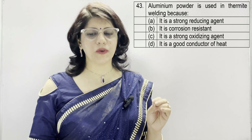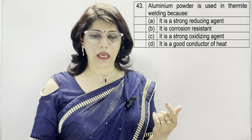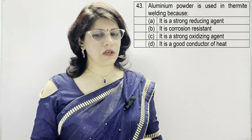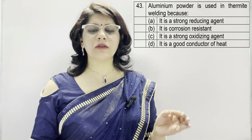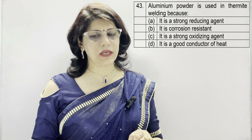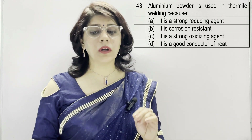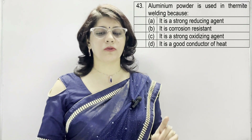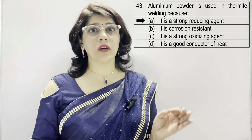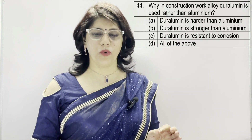In question number 43: aluminium powder is used in thermite welding because — A: it is a strong reducing agent, B: it is corrosion resistant, C: it is a strong oxidizing agent, D: it is a good conductor of heat. The correct option is A — it is a strong reducing agent.